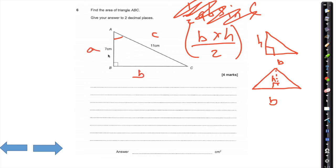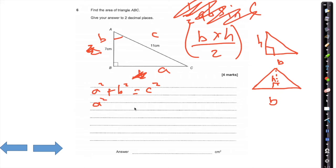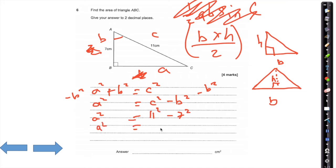Either of the two shorter sides could be A or B — it doesn't matter which. What matters is that C is opposite the right angle. So A squared plus B squared equals C squared. If I rearrange to get A as the subject: A squared equals C squared minus B squared, which is 11 squared minus 7 squared. A squared equals 72.